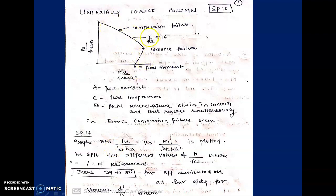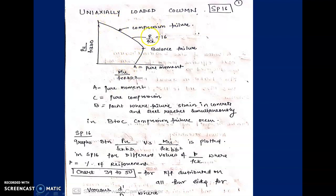In SP16, there are graphs for p/fck where p is the percentage of steel. When p/fck = 0.16, the intersection of Mu/(fck·B·D²) and Pu/(fck·B·D) gives that curve, from which you can read the percentage of steel p. For given Pu and Mu, we find the suitable percentage of steel from these charts.